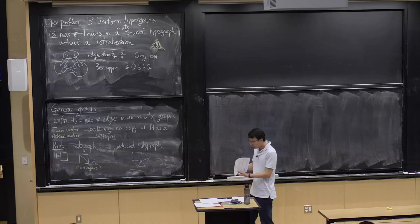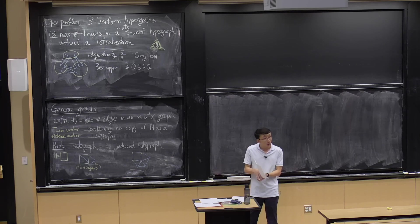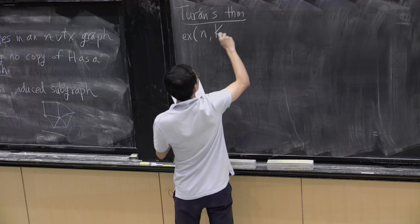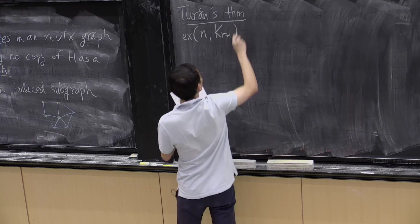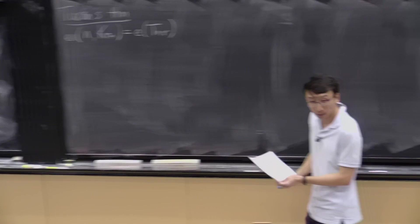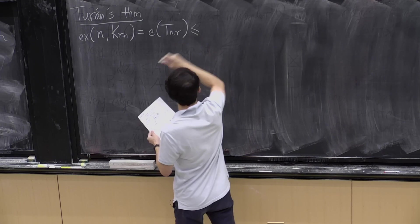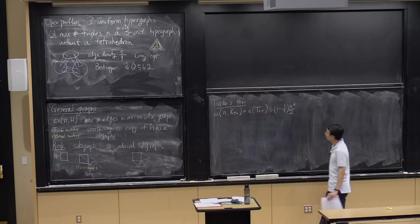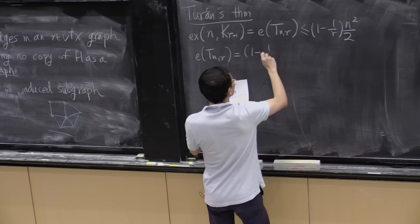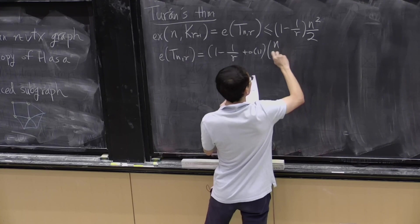Let's recap what Turán's theorem tells us. The extremal number of cliques K_{r+1} is precisely the number of edges in the Turán graph. In particular, it is at most (1 - 1/r)·n²/2, which is asymptotically the number of edges in the Turán graph as n goes to infinity for fixed r.